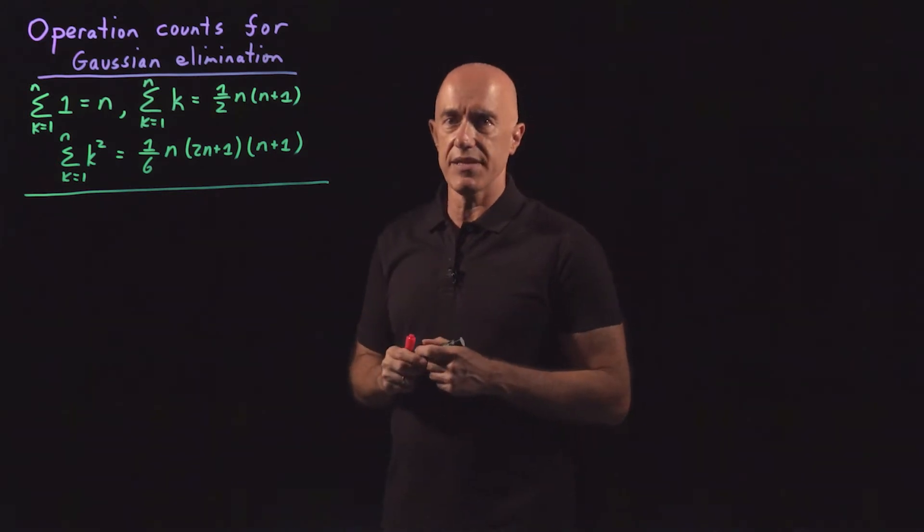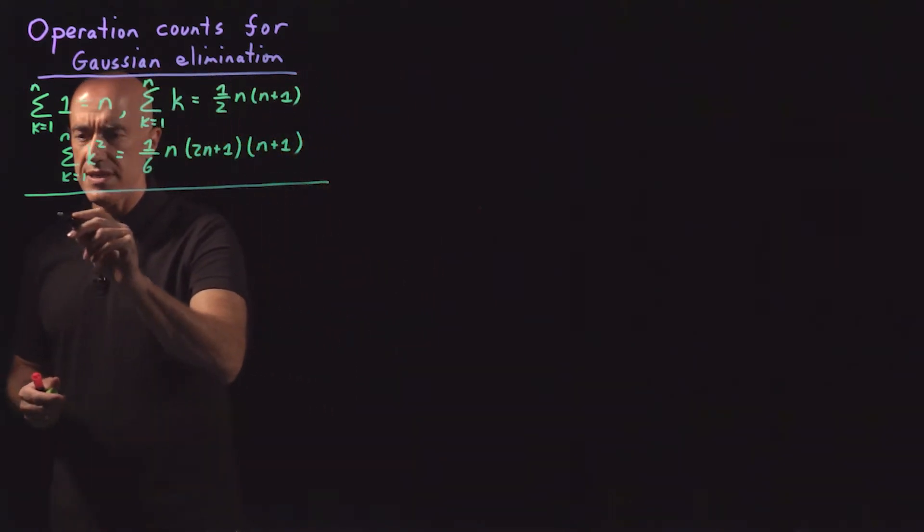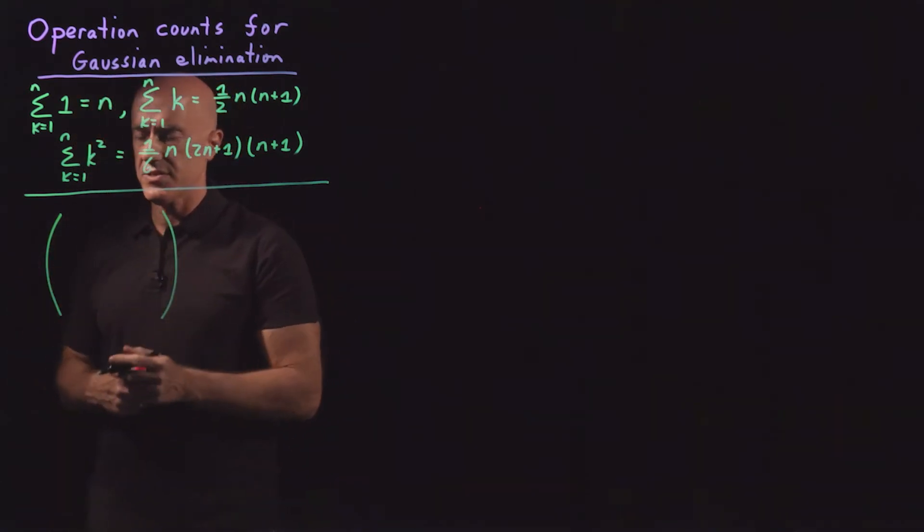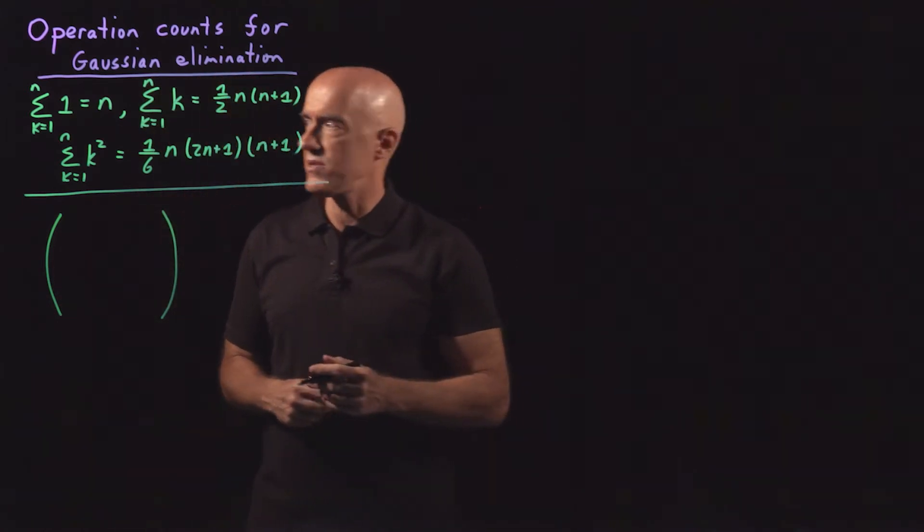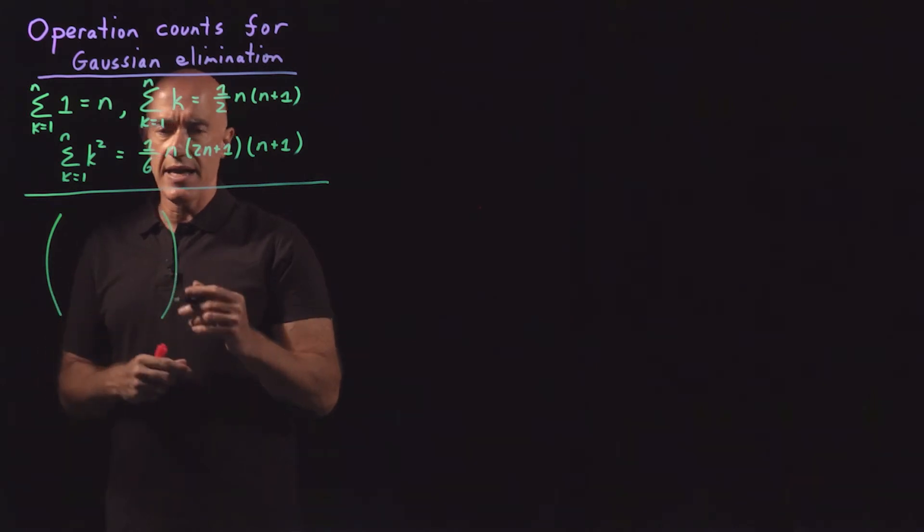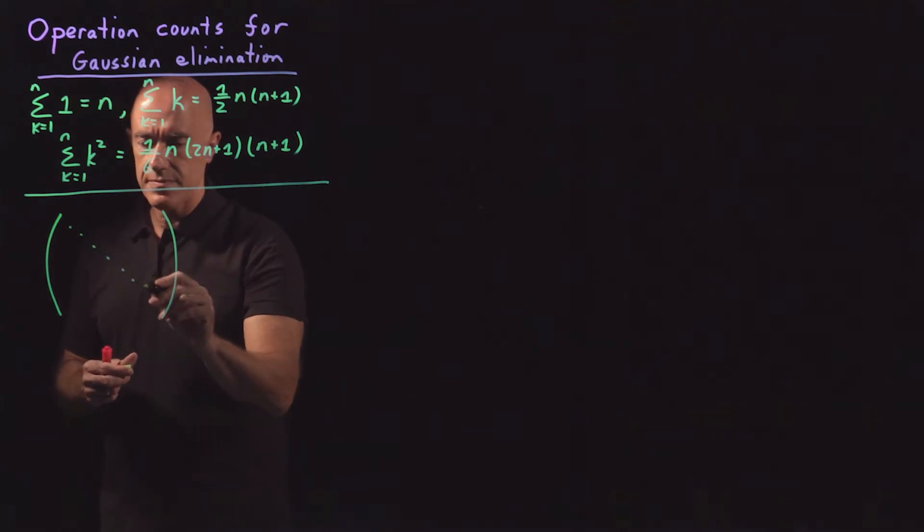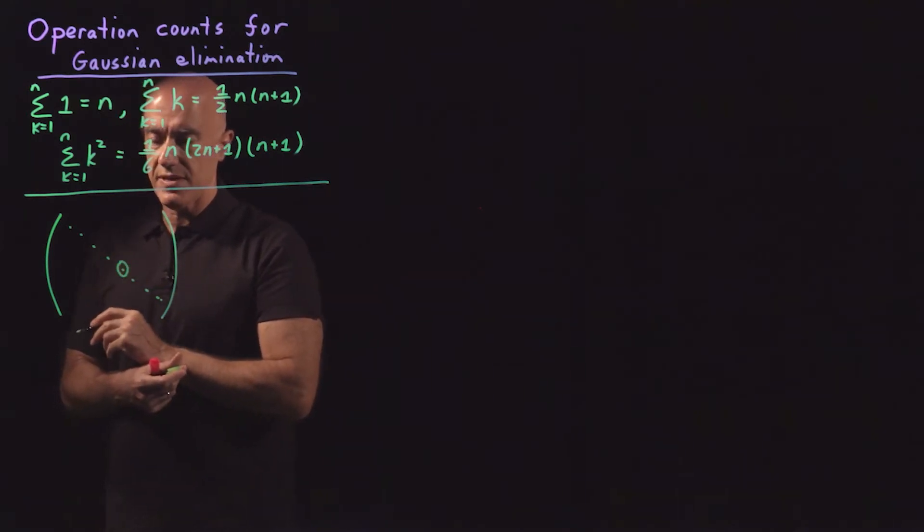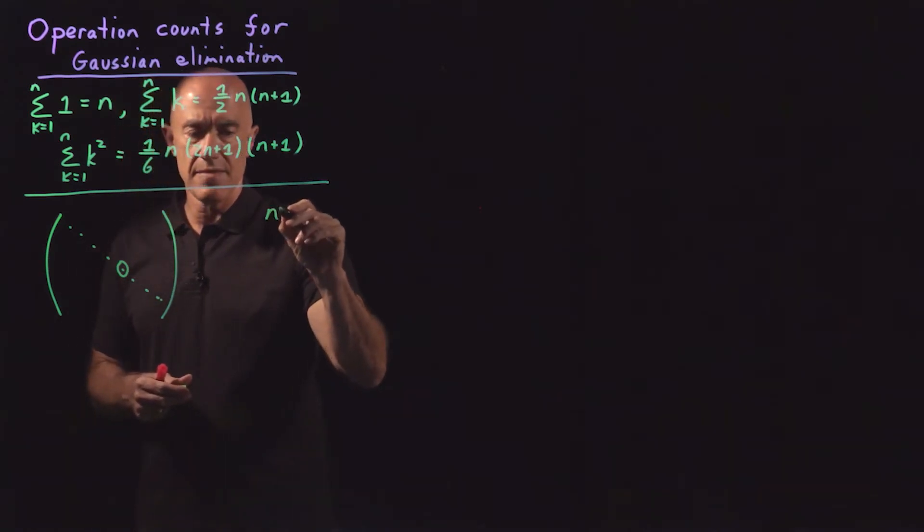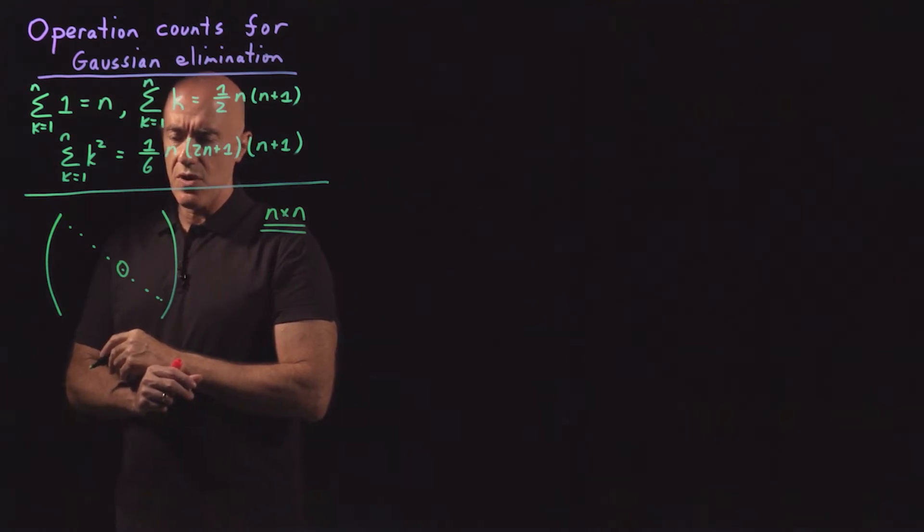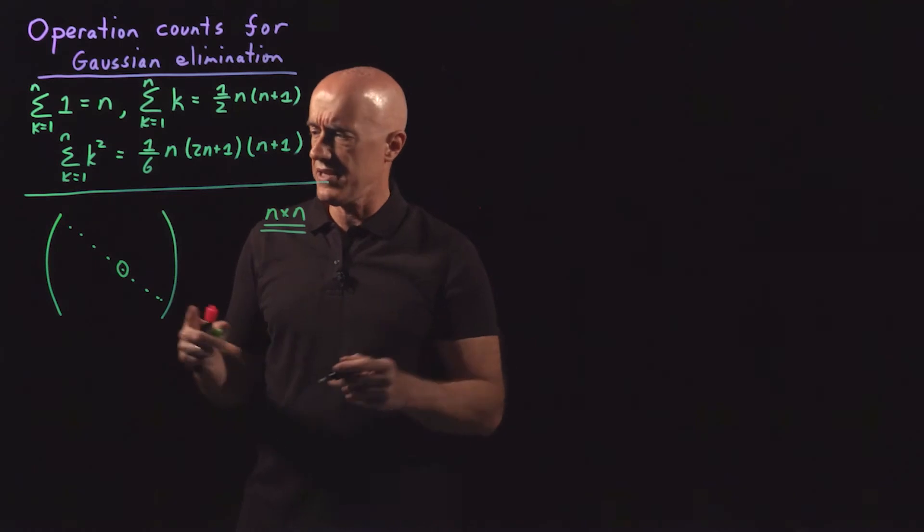Okay, so let's look at Gaussian elimination. So I want to look at one step in the Gaussian elimination. So we have our matrix, n by n matrix, or we can have an augmented matrix, but let's consider n by n. And then we have our pivot. So this is our diagonal. And then we have a pivot here somewhere. So let's say that's the pivot. This is an n by n matrix.